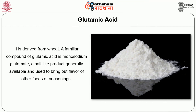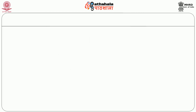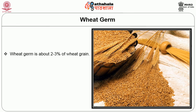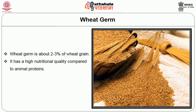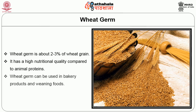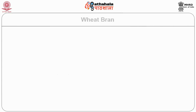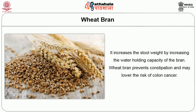Wheat germ is about 2–3% of the wheat grain and has high nutritional quality comparable to animal proteins. Wheat germ can be used in bakery products and weaning foods. Wheat bran increases stool weight by increasing the water-holding capacity of the bran. Wheat bran prevents constipation and may lower the risk of colon cancer.